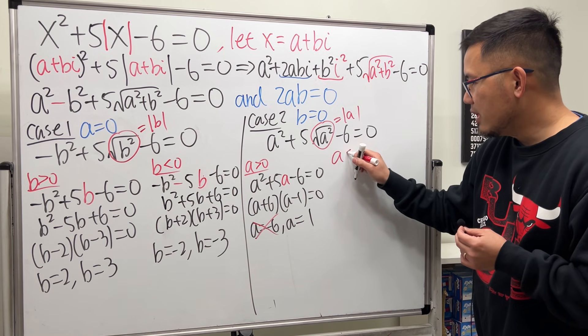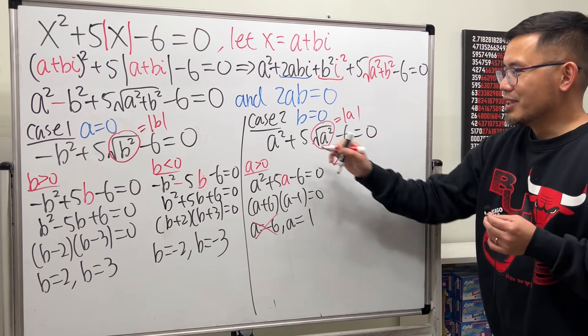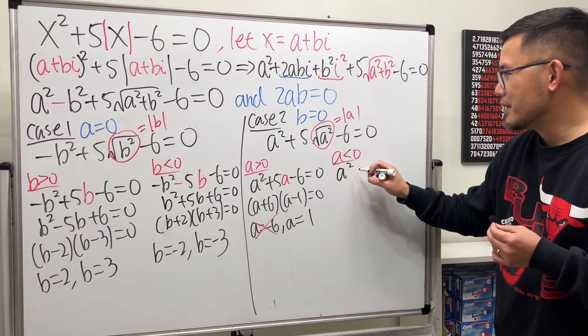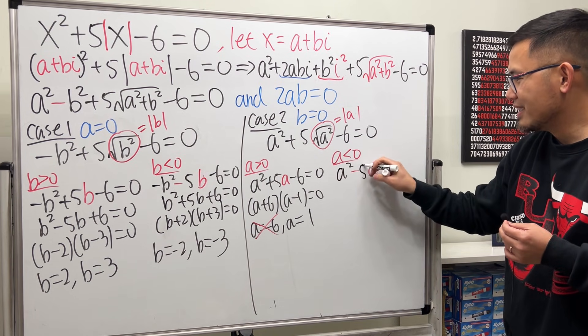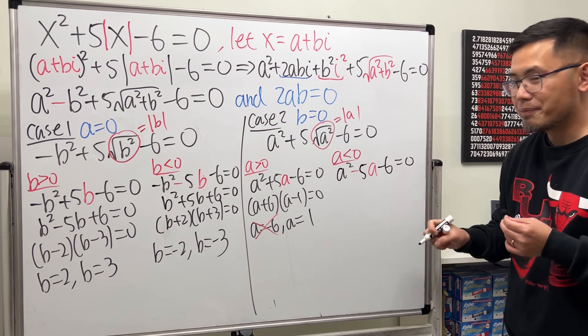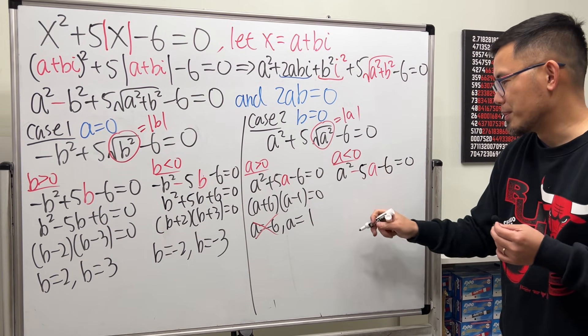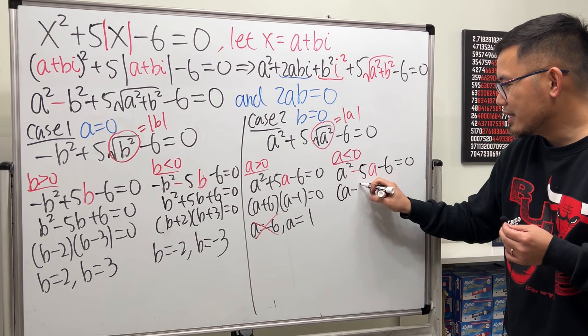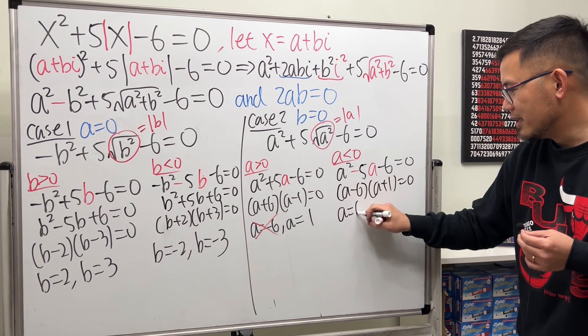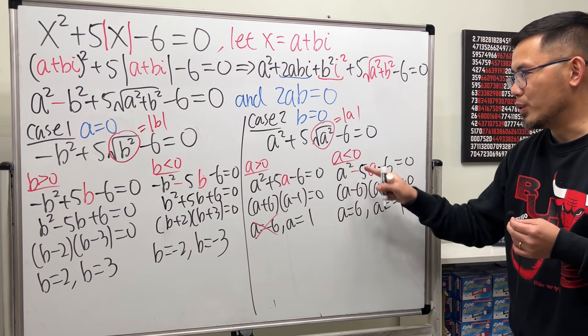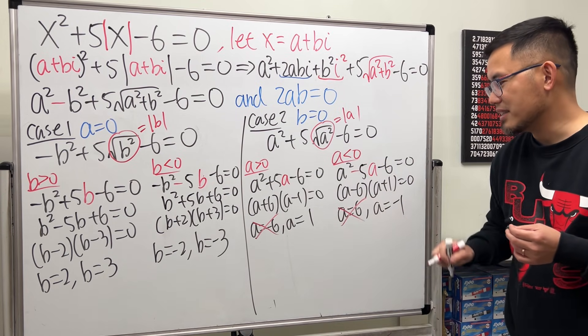All right. Finally, a less than 0. So we will have a squared. This is minus a. And then we have the 5. And then minus 6. That's equal to 0. Factor again. You get negative 1, by the way. Anyway, you get a minus 6 times a plus 1. Either you have 6 or negative 1. But we want negative right here. So this is not it.